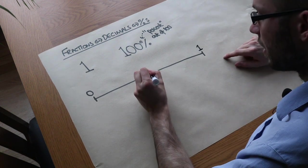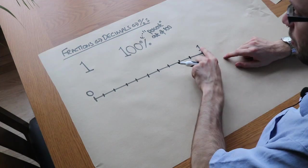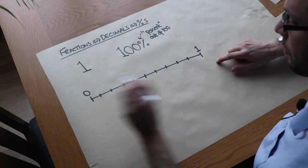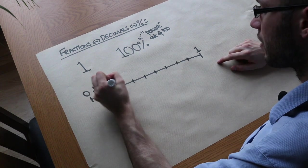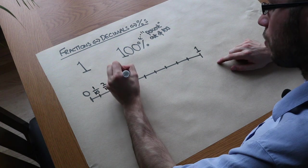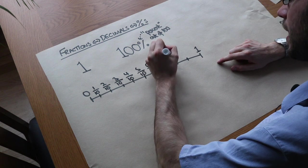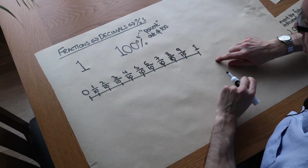Now we could split this up in various ways. So I could split it into tenths for example. Now if we split it up in fractions, if I split a whole into 10 pieces, each piece is worth a tenth. So we have a tenth, two tenths, three tenths, four tenths, five tenths, six tenths, seven tenths, eight tenths, nine tenths, and then we get ten tenths, which is the same as a whole.